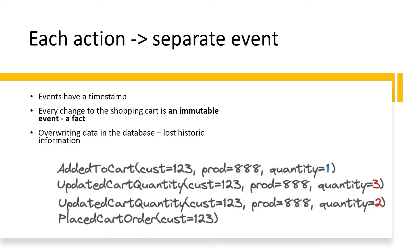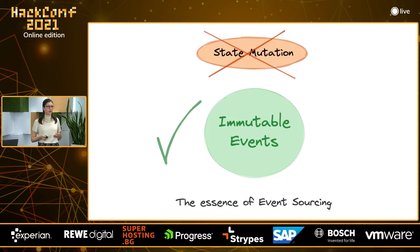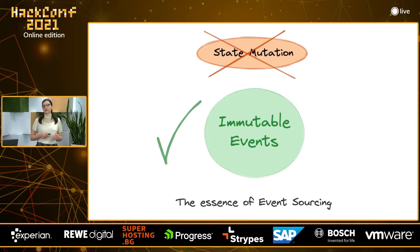It doesn't matter that at the end I decided on a different quantity. This prevents overriding data in the database. You might use different types of events, for example for adding a product or for placing the order at the end. With this example, we basically reach the essence of event sourcing: always prefer immutable events and avoid state mutation. The foundational idea of event sourcing is really to capture the application state as a sequence of events. Now you are probably thinking: okay, I got all of these events stored — how am I going to query the state? Let's continue with the talk and I hope you will find an answer to this question.